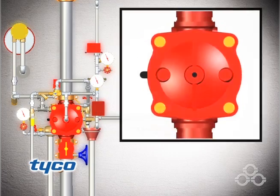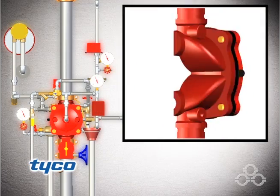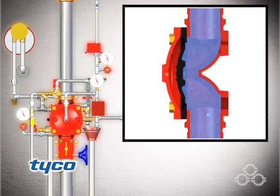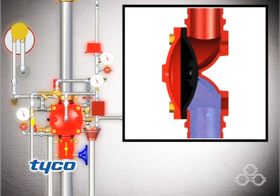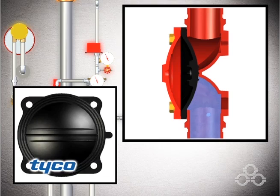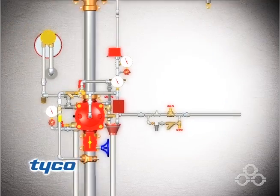The central component of the system is the Model DV-5 Deluge Valve, a diaphragm-style automatic water control valve used in deluge pre-action and special types of fire protection systems. Its single moving part, the diaphragm, depends upon water pressure in the diaphragm chamber to hold the diaphragm closed against the water supply pressure.